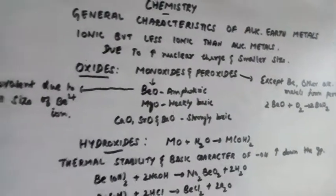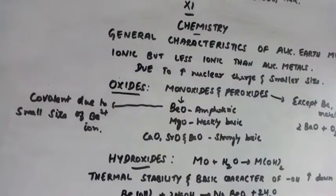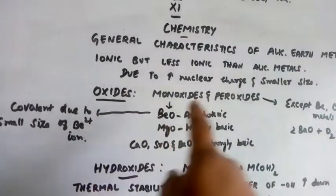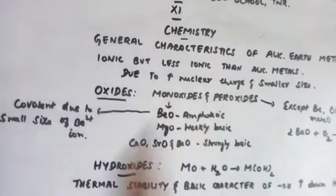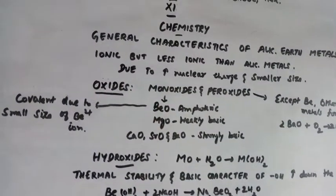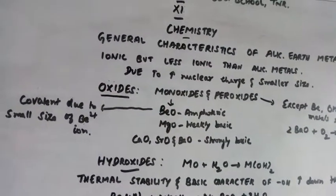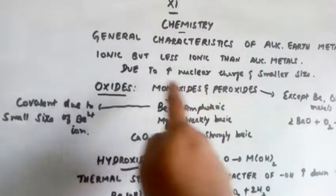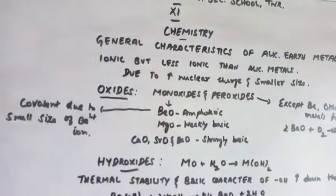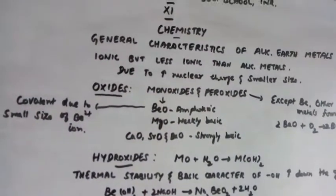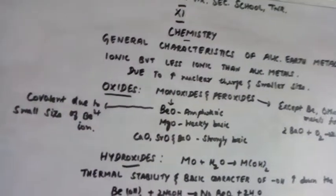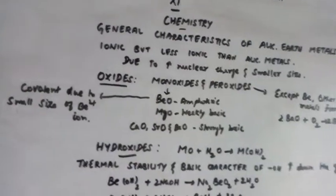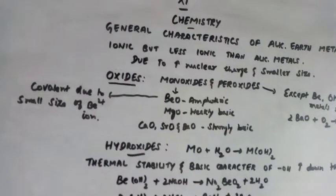What is the reason behind this? Due to increased nuclear charge and smaller size. These are the two factors because of which alkaline earth metals are less ionic than alkali metals.